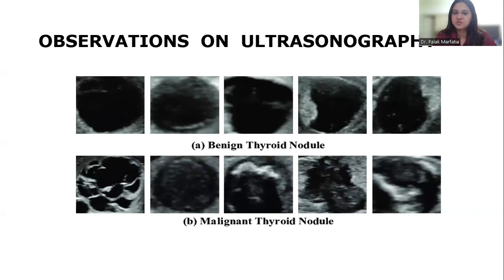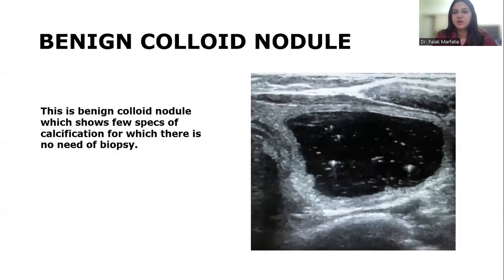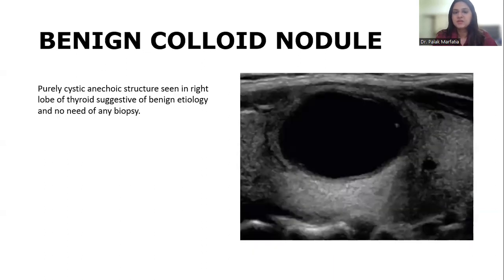Observations of Ultrasonography. This is how a benign thyroid nodule looks and this is how a malignant thyroid nodule looks. Benign colloid nodule: this shows few specks of calcification, for which there is no need of biopsy. Another benign colloid nodule: a purely cystic anechoic structure seen in the right lobe of thyroid, suggestive of benign etiology, with no need of biopsy.